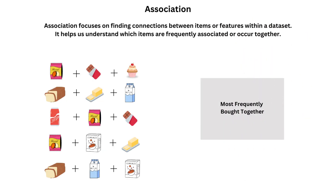Association in unsupervised learning finds connections between items or features within a dataset. It helps us understand which items are frequently associated or connected. One common application of association is market basket analysis, in which the algorithm analyzes customer purchase data to identify items most frequently bought together. This information is beneficial for businesses to understand customer preferences and optimize their marketing strategy.